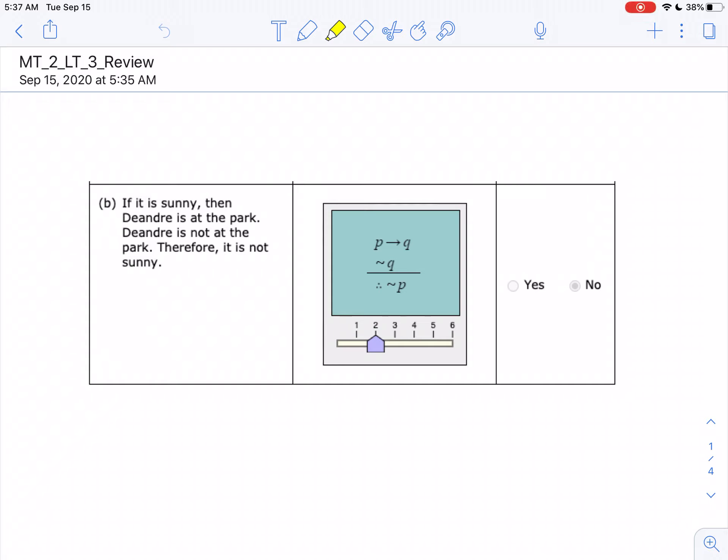Well, let's take a look at your affirmation. On this first problem, it says, If it is sunny, then D'Andra is at the park. D'Andra is not at the park. Therefore, it is not sunny.